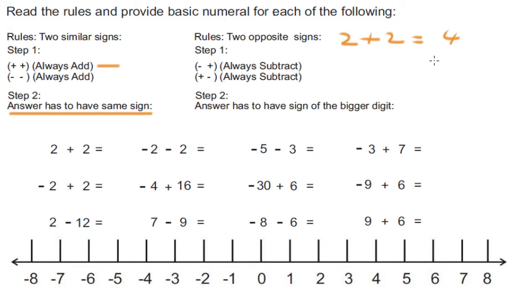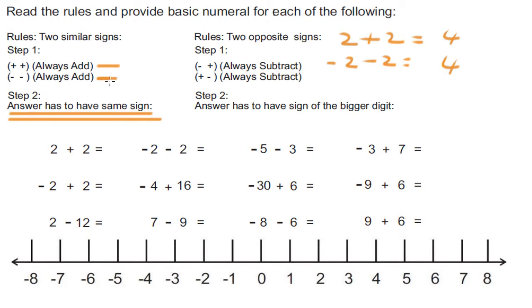Answer has to be positive since both numbers are positive. So two plus two is four, or positive four. Negative two minus two — two similar signs, always add. So two plus two is equal to four. Step number two: answer has to have the same sign. Both are negative numbers, so this has to be negative four.